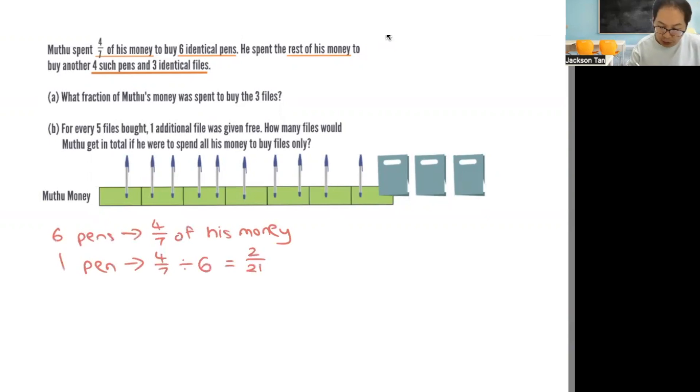Since you know that one pen is two out of twenty-one, you can find four pens. So two out of twenty-one times four equals eight out of twenty-one.